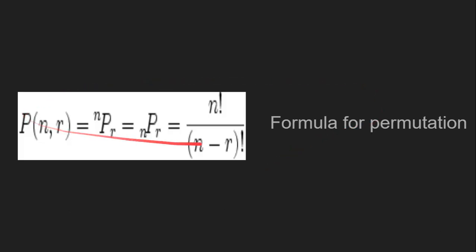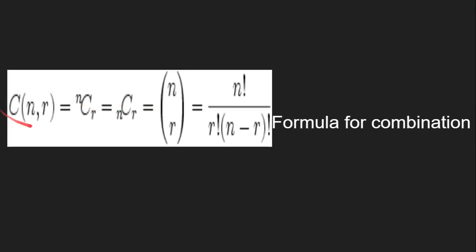The formula for permutation is mathematically given as nPr, which equals n factorial divided by n minus r factorial. For combination, it is written as nCr, and the formula is n factorial divided by r factorial into n minus r factorial. These are the formulas for both permutation and combination.